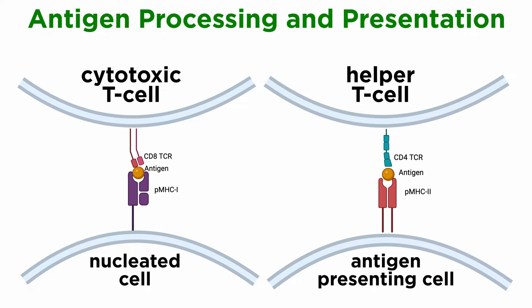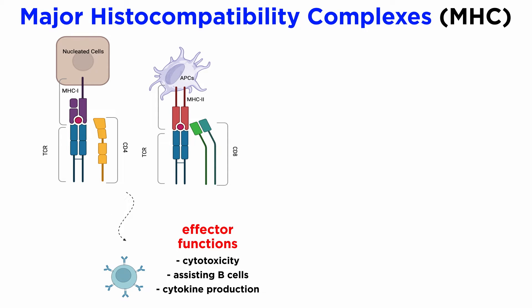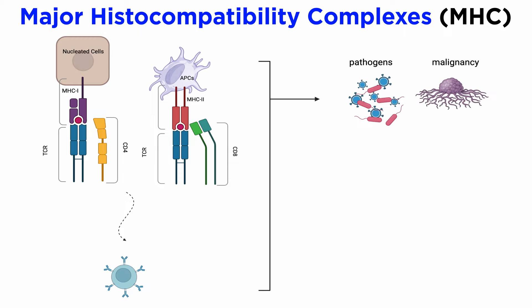Adaptive immune responses rely on antigen processing and presentation pathways for their effector functions. These pathways ensure that the glycoproteins encoded by the major histocompatibility complex, MHC, are loaded with their appropriate ligands. Only such MHC molecules expressed on the surface of antigen-presenting cells can activate T-cells, which can then execute effector functions such as cytotoxicity, assisting B-cells, and inducing cytokine production. These molecules allow the adaptive immune system to survey the host proteome and its modifications.